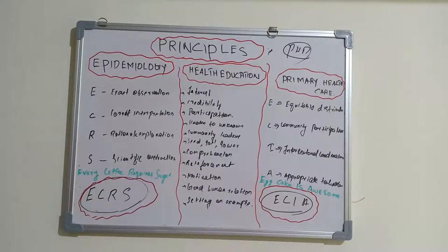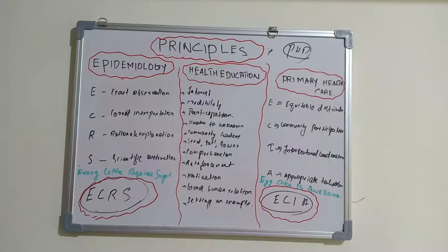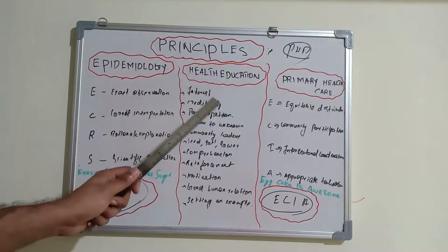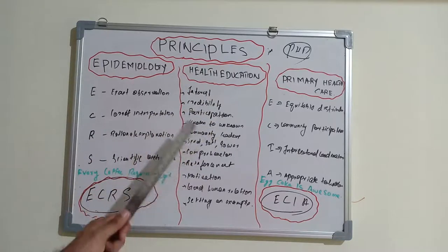The next set of principles is health education. Health education is a very big chapter and lots of questions are asked on it. It covers the approaches of health education, principles, communication, health education and propaganda, and the methods of health education — individual, group, and mass methods — like group discussion, panel discussion, workshop, role play, and many others.